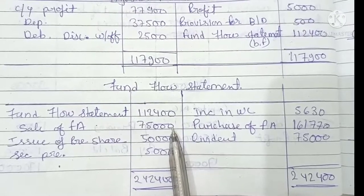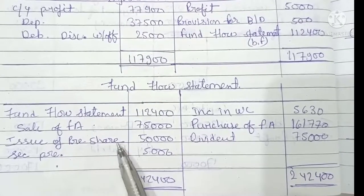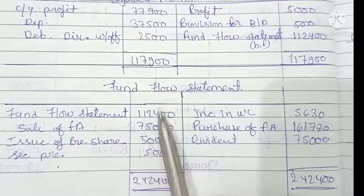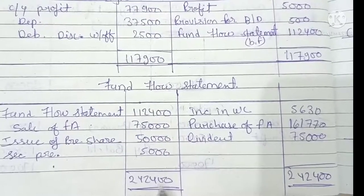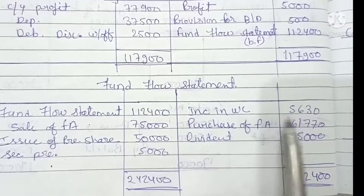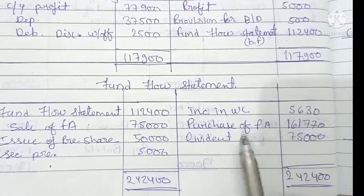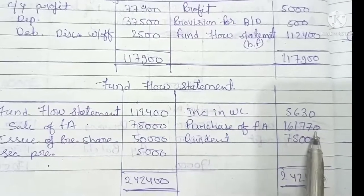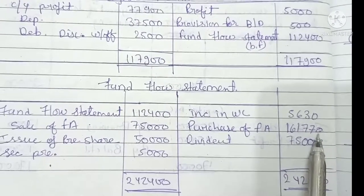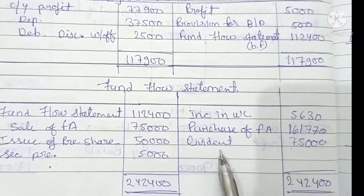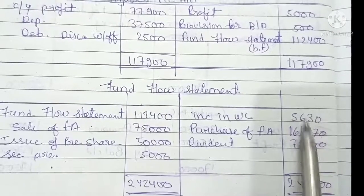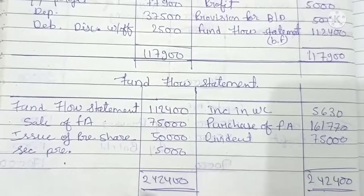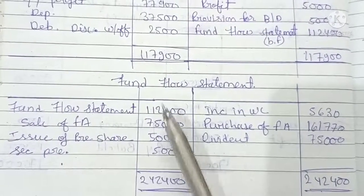In the fund flow statement: we sold machinery for 75,000, issued debentures for 50,000, and received security premium of 5,000 — total sources 2,42,400. Applications: increase in working capital 5,630, purchase of fixed assets 1,61,770, dividend paid 75,000 — total 2,42,400. The balance matches, confirming our fund flow statement is correct.